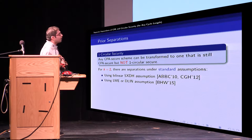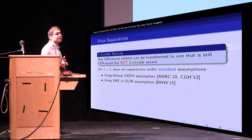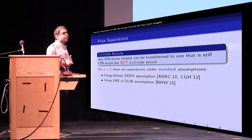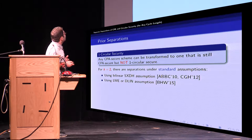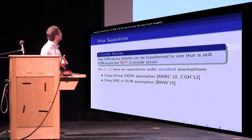For K equals 2 there are separations based on standard assumptions. Earlier works were based on SXDH assumption on bilinear groups and more recently we have counter-examples from learning with errors and decision linear assumption.